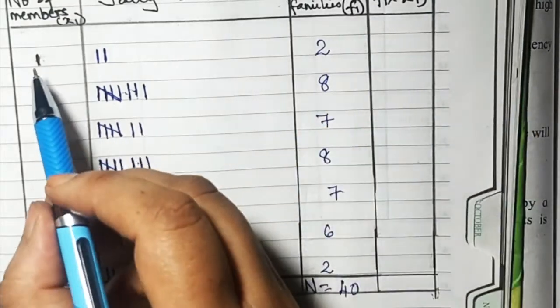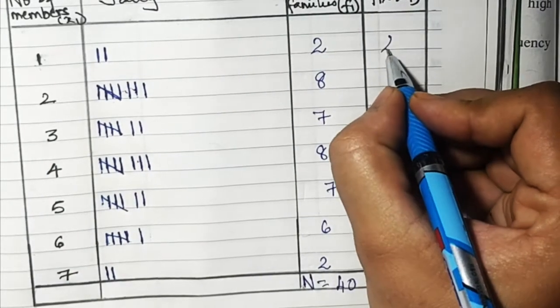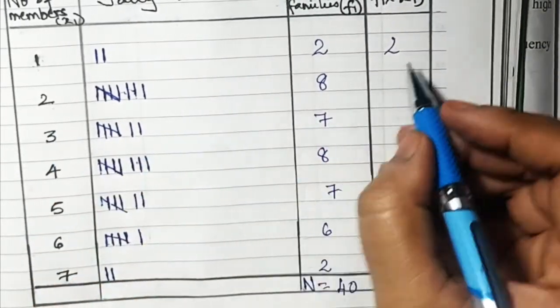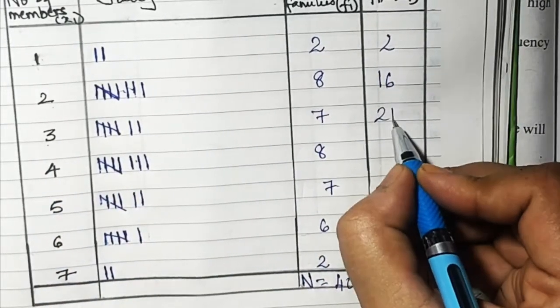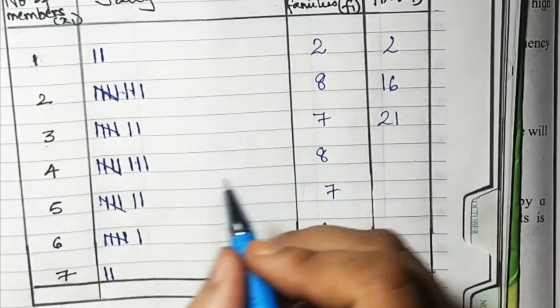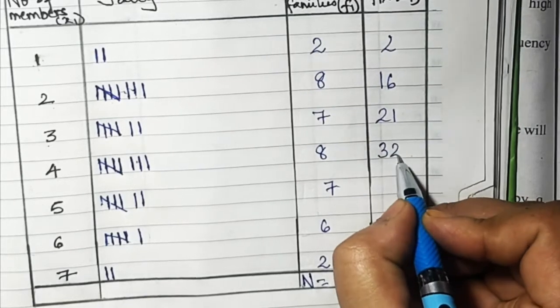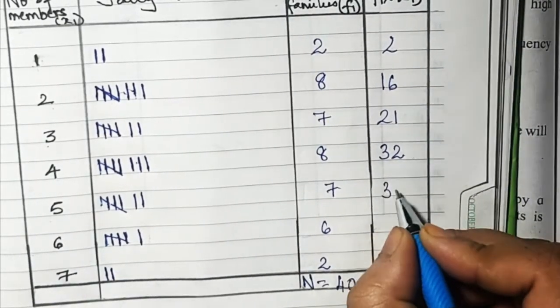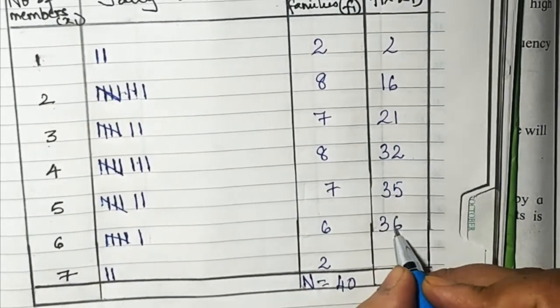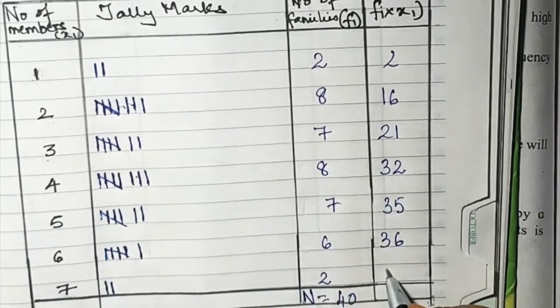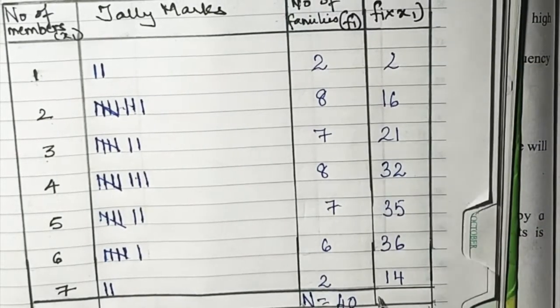Now fi into xi, that means multiply this with this. One into two is two. Two into eight is sixteen. Three into seven is twenty-one. Four into eight is thirty-two. Five into seven is thirty-five. Six into six is thirty-six. Seven into two is fourteen.